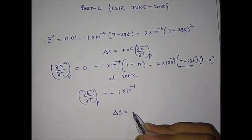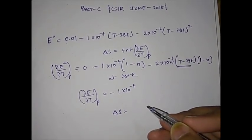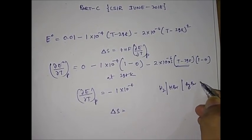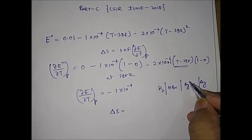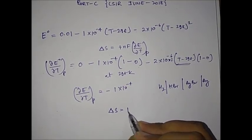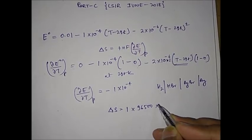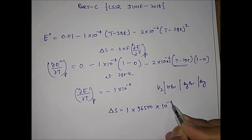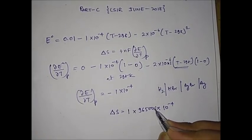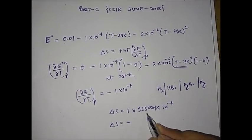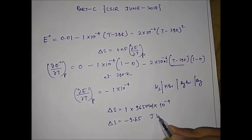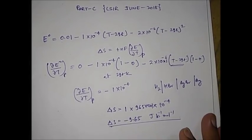Now to find ΔS°, we put the values into ΔS = nF(dE/dT). The value of n is 1, because in the cell reaction HBr, AgBr, the conversion is Ag⁺ to Ag, which involves only one electron. So: ΔS = 1 × 96500 × (−1×10⁻⁴) = −9.65 joule per kelvin per mole.